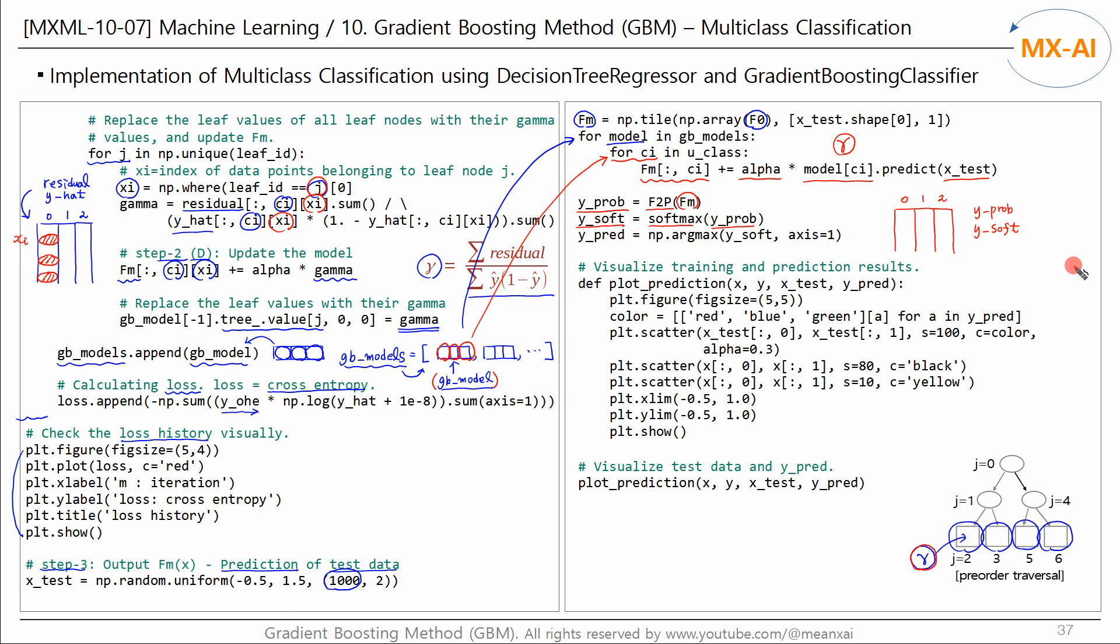The shape of the y-prob and the y-sof look like this. Finally, find the class with the highest probability value. For example, if this probability is highest, class 1 is selected as the final prediction. This is YPRED, the predicted class of the test data. Now let's check the results by visualizing the training data, test data, and the prediction classes.